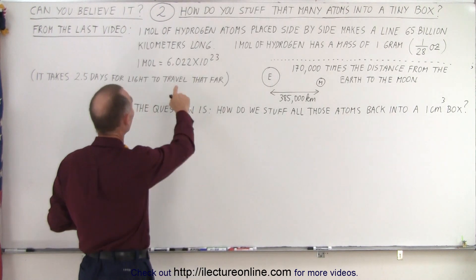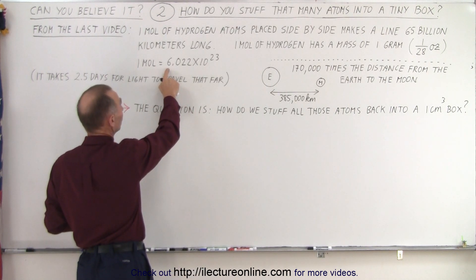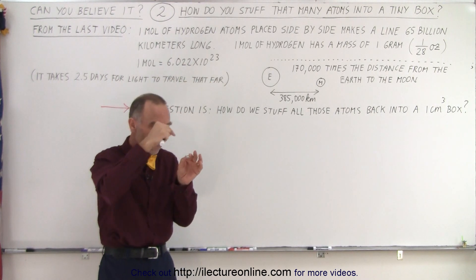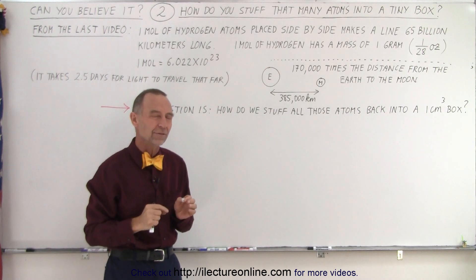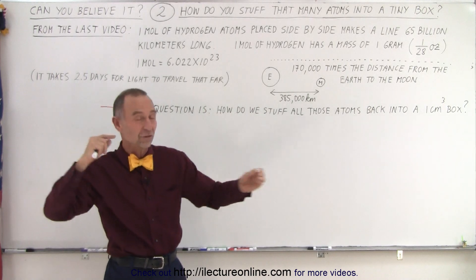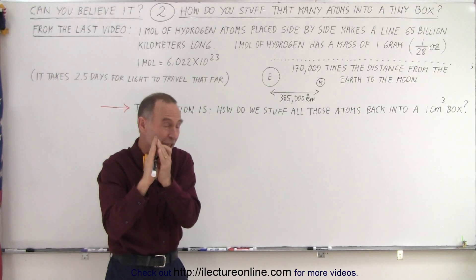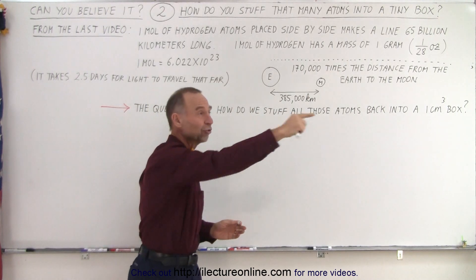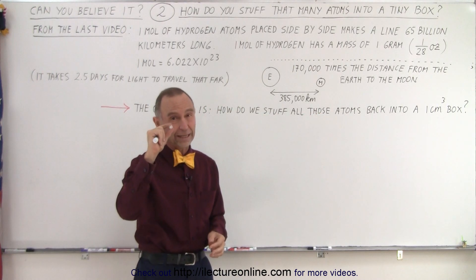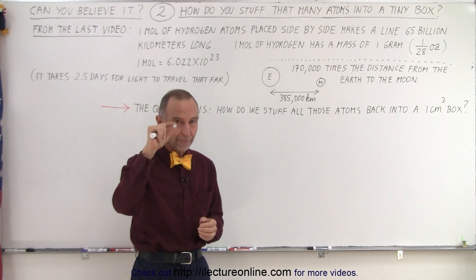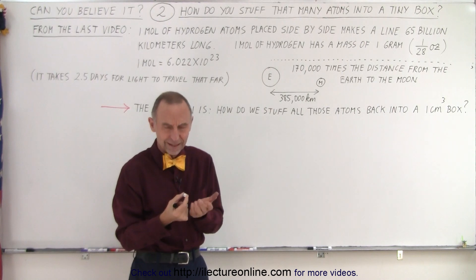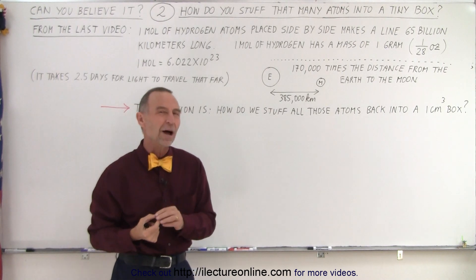Can you take that many atoms—a mole of atoms, which is Avogadro's number, about 6×10^23 atoms—and stuff all of those back into a little box like this? It seems virtually impossible. How can you take a line of atoms that stretches 65 billion kilometers and put them into a single box about this big? Well, it's actually possible. At first, when I thought about it, it seemed impossible, but here's how we can figure it out.